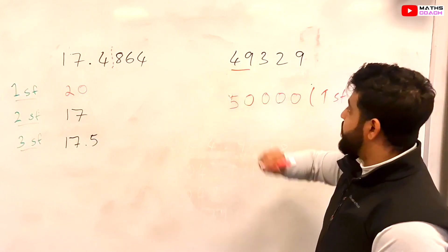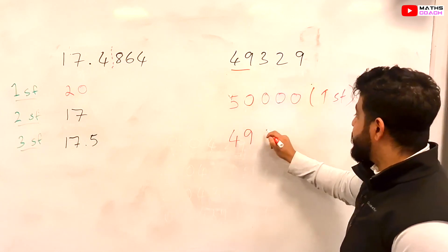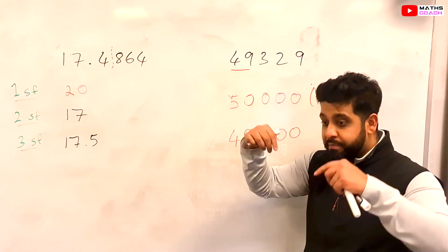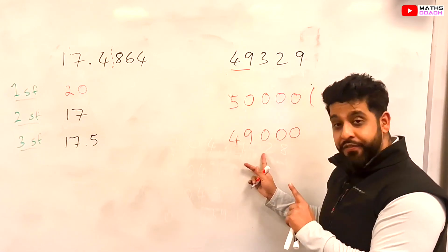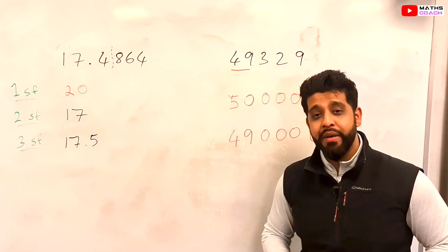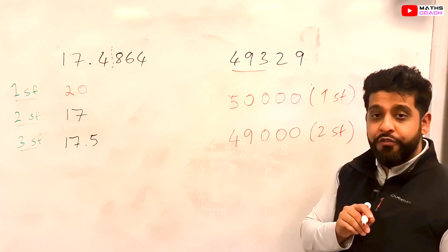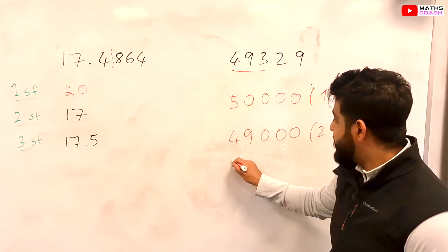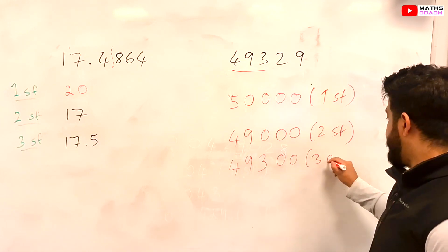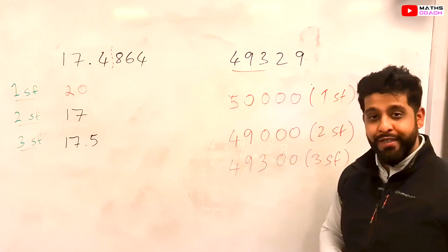For two significant figures we consider 4 and 9. The next digit, 3, doesn't round the 9 up, so we write 49 and fill the remaining places with zeros: 49000 to two significant figures. For three significant figures we consider 4, 9, and 3. The next digit, 2, doesn't round the 3 up, so we write 493 followed by zeros: 49300 to three significant figures.